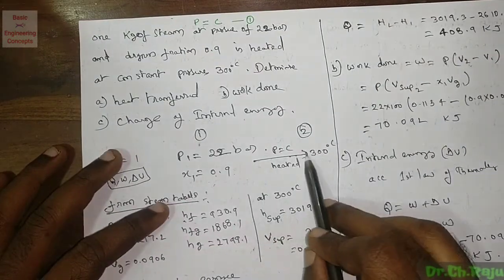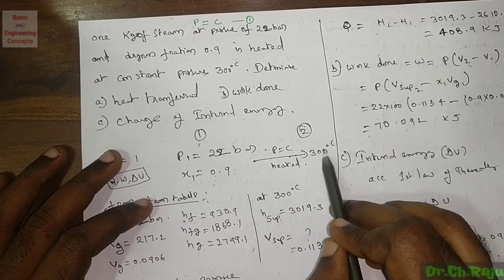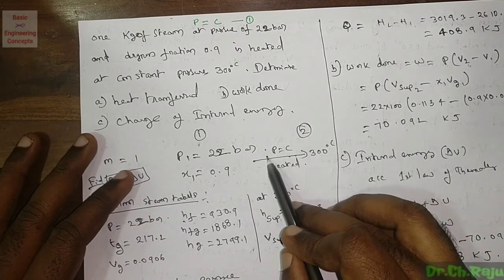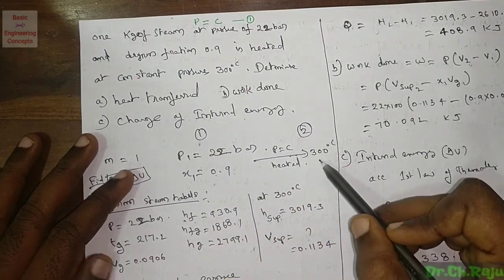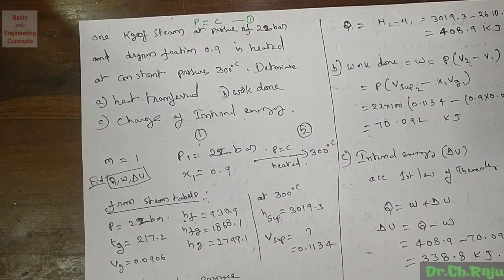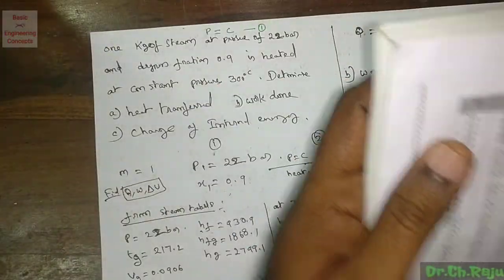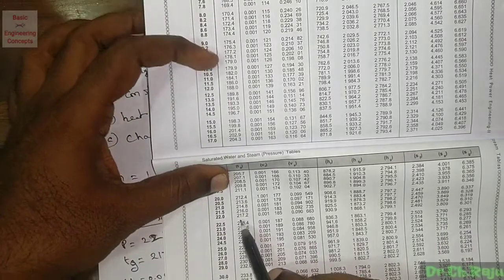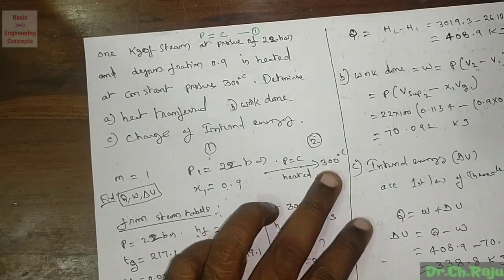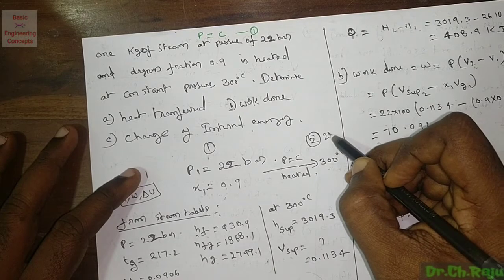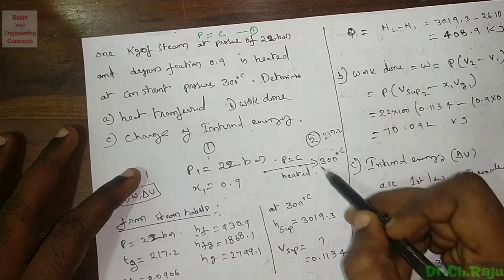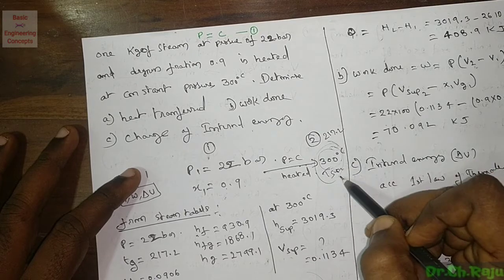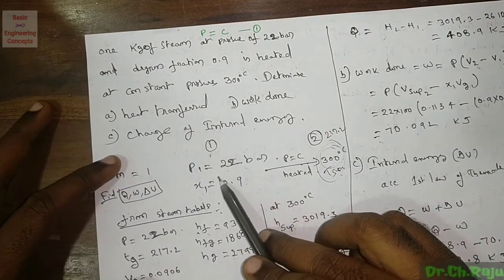This wet steam is heated at constant pressure up to 300°C. At 22 bar, the saturation temperature is 217.2°C. Since 300°C is above the saturation temperature, the final condition is superheated steam. So condition 1 is wet steam at 22 bar, and condition 2 is superheated steam at 22 bar and 300°C.